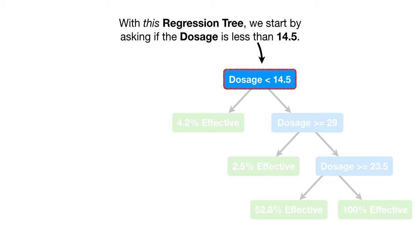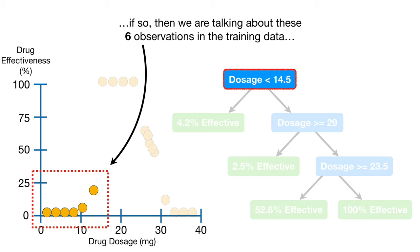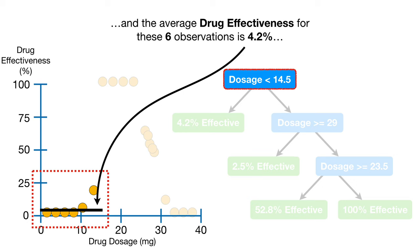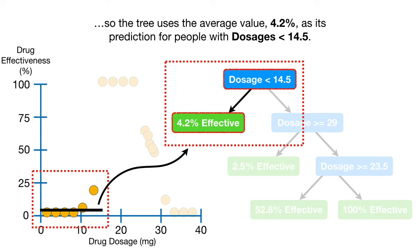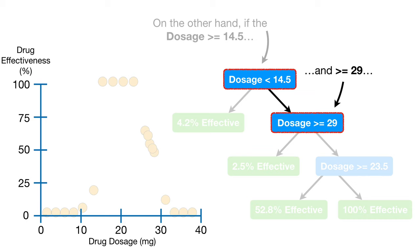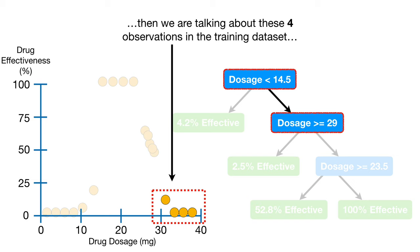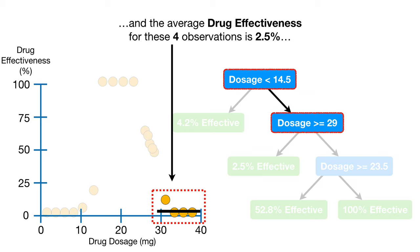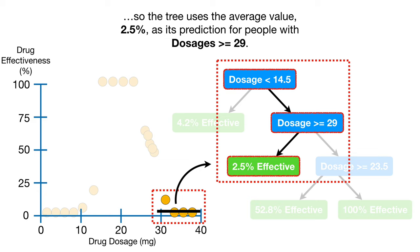With this regression tree, we start by asking if the dosage is less than 14.5. If so, then we are talking about these six observations in the training data. And the average drug effectiveness for these six observations is 4.2%. So the tree uses the average value, 4.2%, as its prediction for people with dosages less than 14.5. On the other hand, if the dosage is greater than or equal to 14.5 and greater than or equal to 29, the tree uses the average value, 2.5%, as its prediction for people with dosages greater than or equal to 29.